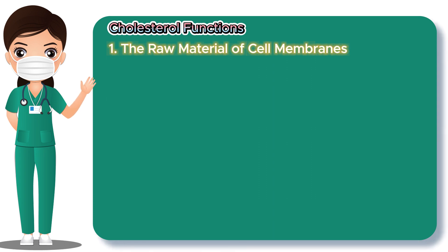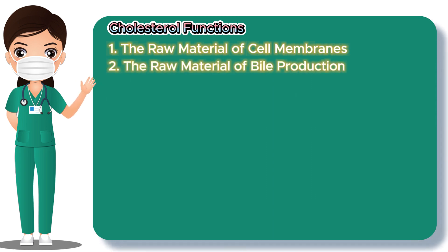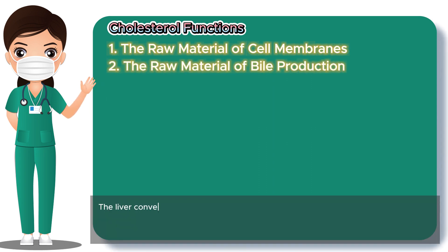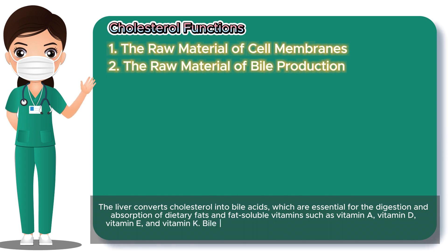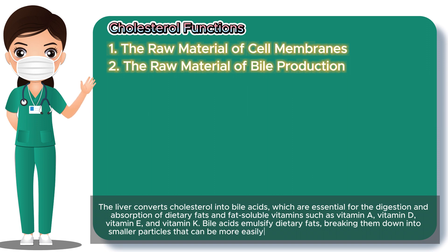Number 2: The Raw Material for Bile Production. The liver converts cholesterol into bile acids, which are essential for the digestion and absorption of dietary fats and fat-soluble vitamins such as vitamin A, vitamin D, vitamin E, and vitamin K. Bile acids emulsify dietary fats, breaking them down into smaller particles that can be more easily digested and absorbed in the intestines.